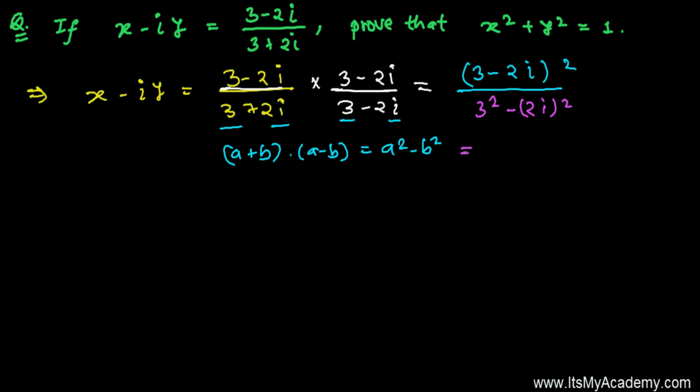And now we are going to use the formula of (a-b)², right? That's going to be a², that is 9, minus 2ab plus b², that is (2i)², that is 4i², and then divided by 3², that is 9, and (2i)², that is 4i².